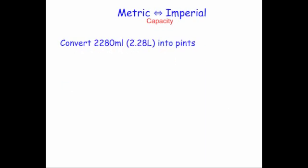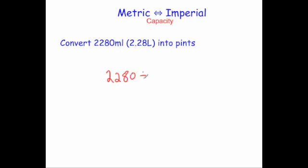The next question says convert 2280 milliliters (or 2.28 liters) into pints. To go from milliliters to pints you divide by 570, so we do 2280 divided by 570, which equals 4. That means it is 4 pints — so 4 pints is equal to 2280 milliliters or 2.28 liters.